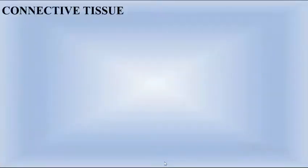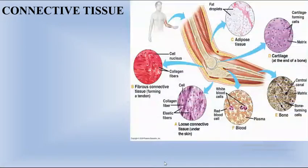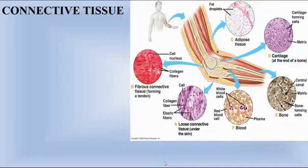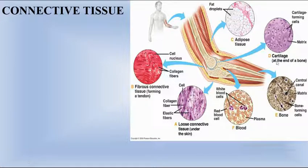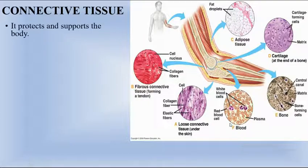In today's class we are going to study about connective tissue. As the name suggests, these tissues are connected. Here you can see a picture of connective tissue showing a hand at the elbow with various parts: loose connective tissue under the skin, fibrous connective tissue, adipose tissue, cartilage, bone tissue, and blood.